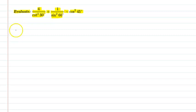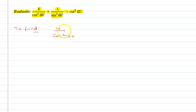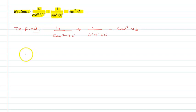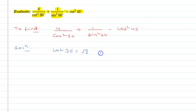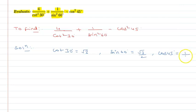So let's start. Let's find the value of 4 upon cot square 30 degree plus 1 upon sin square 60 degree minus cos square 45 degree. I know that cot 30 is root 3, sin 60 is root 3 upon 2, and cos 45 is 1 upon root 2.